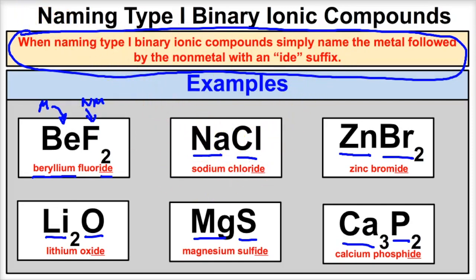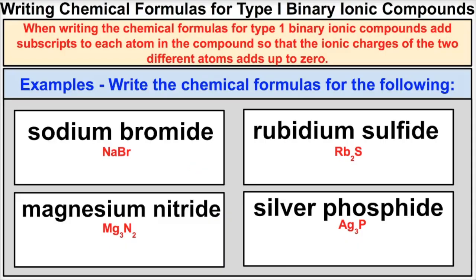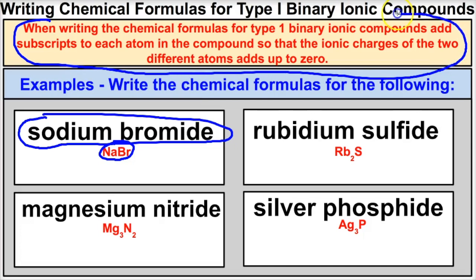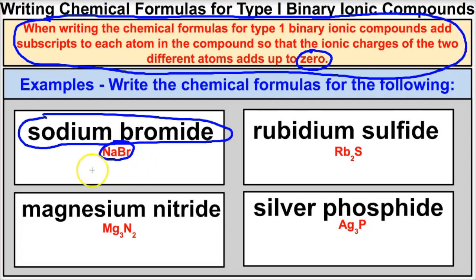But what if we're working the other way? What if you are given the name and you're asked to write the chemical formula? When writing the chemical formulas for type 1 binary ionic compounds, we're going to have to add subscripts to each atom in the compound so that the ionic charges of the two different atoms add up to zero. Whenever we have a metal bonded to a nonmetal, the ionic charges always must add up to zero. We add subscripts to the elements in our chemical formula to get those ionic charges to add up to zero.